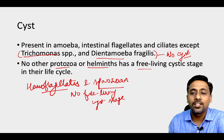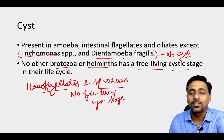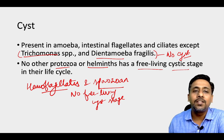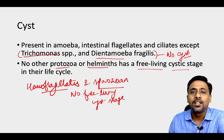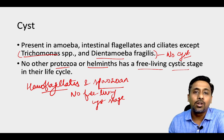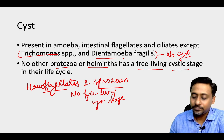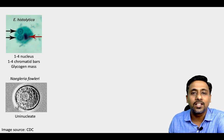Why I am saying free-living cystic stage? Because in some of these protozoan parasites we may see a cystic stage present inside tissues. They have cysts, but not cysts which can survive outside in an external environment — those cysts are present inside certain tissues. An easy way to remember which protozoan parasites have a cystic stage: those which can survive in an external environment will have a cystic stage, and it is because of the cystic stage that they can survive outside.